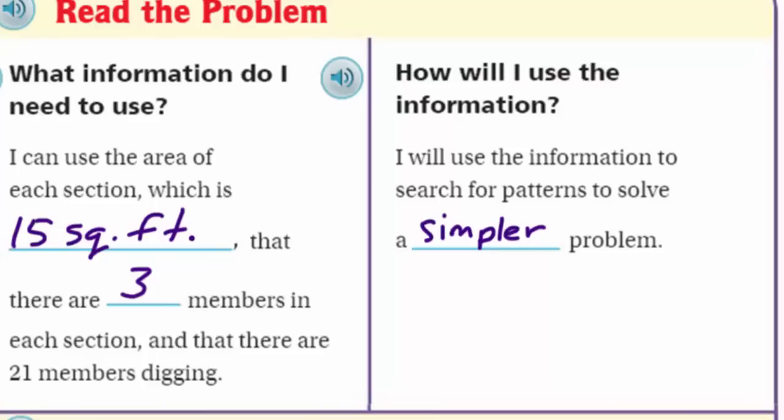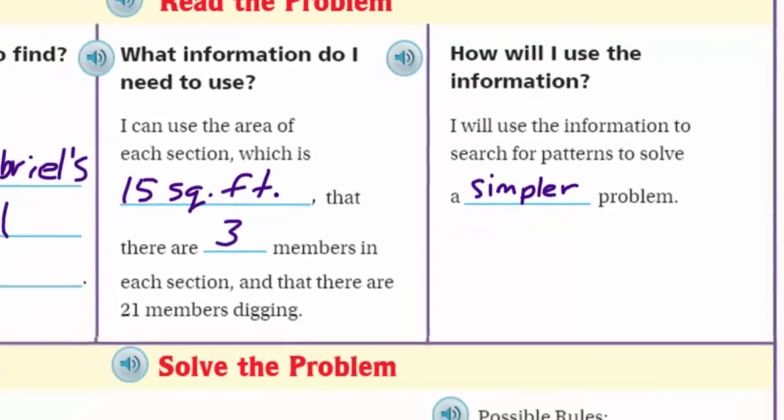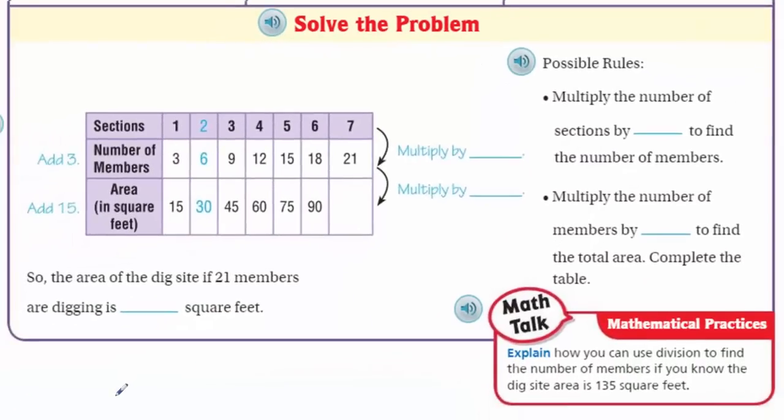It's time to move down to solve the problem. There's a table. They're giving me all kinds of hints. Looks like in the blue. Okay. So, first things is possible rules. It says multiply the number of sections by blank to find the number of members. Okay. Multiply the number of sections.